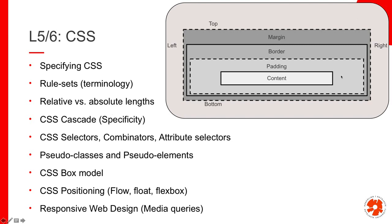As shown in the picture, we discussed the box model — how HTML content is rendered with content, padding within the element, a border around the element, and margin as the space surrounding it. This is an important concept for properly laying out things. We then covered positioning in CSS: flow, floats, and finally flexbox, which is a newer and much easier approach in many ways.